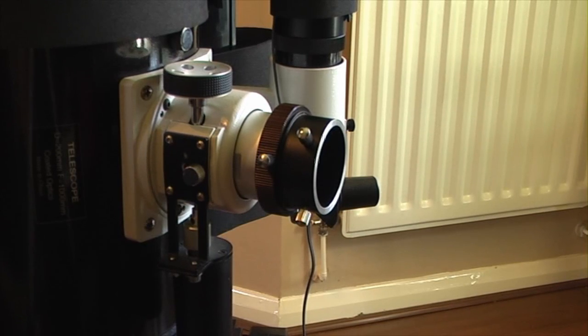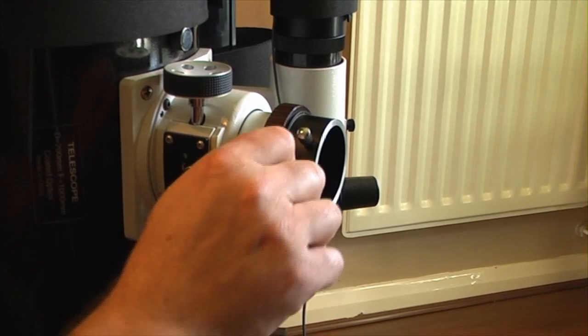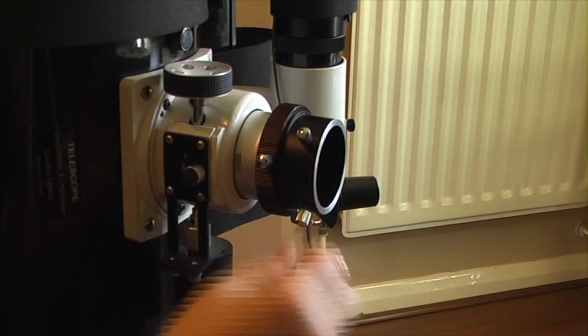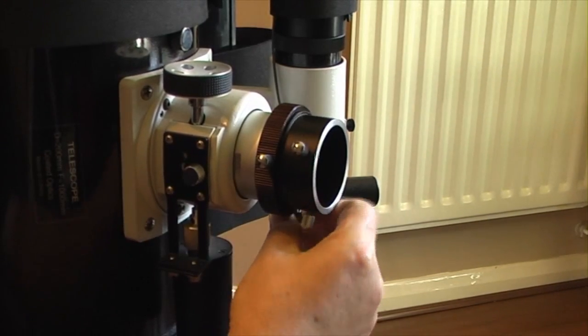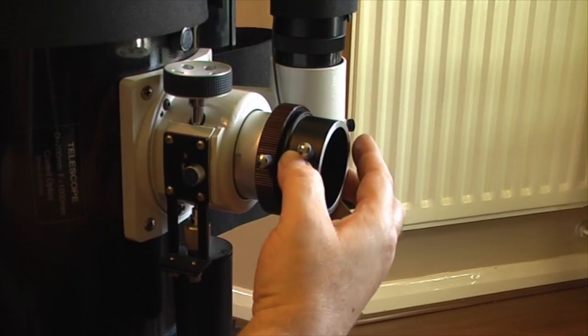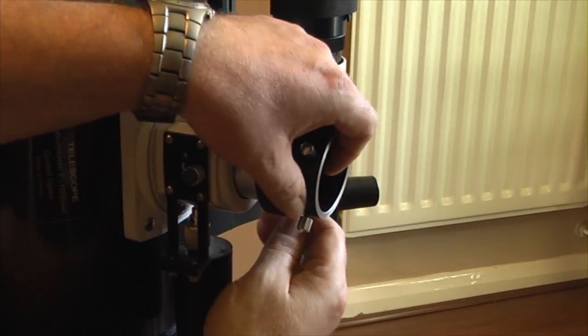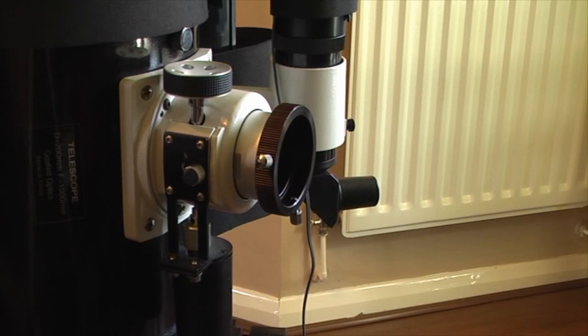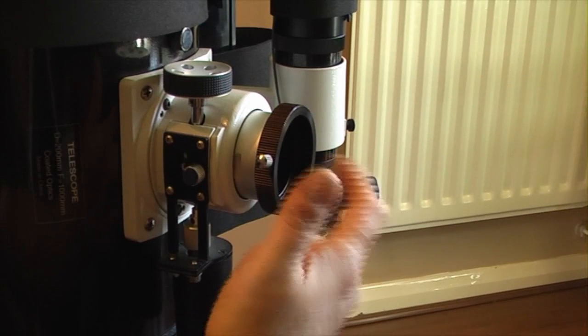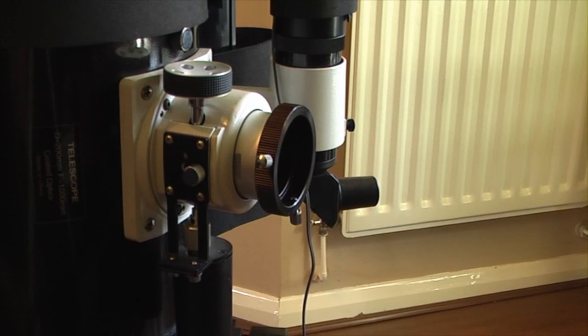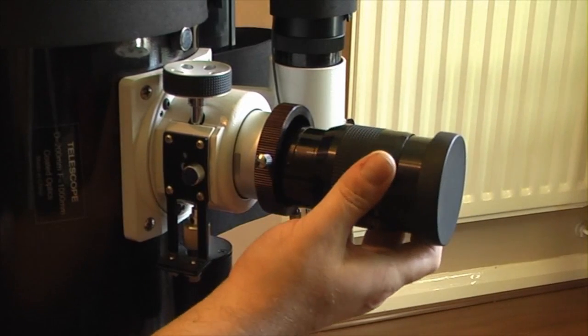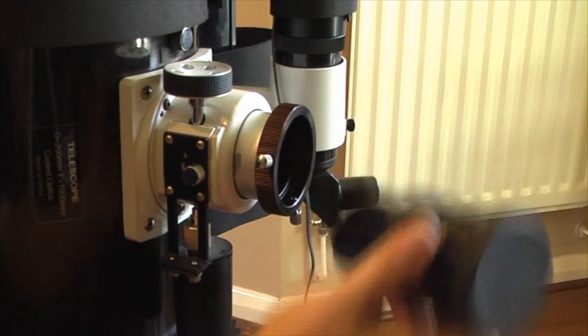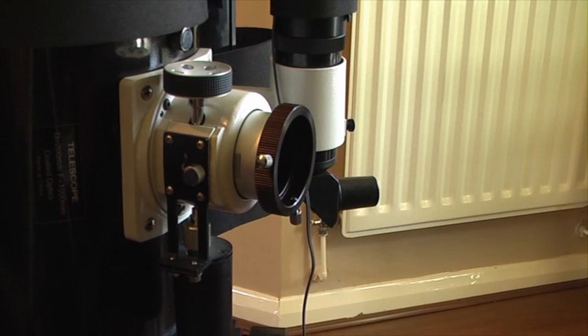Now you would think that Skywatcher would let you just unscrew these two screws like so, take the standard adapter out, and then place 2-inch fittings directly into the focuser tube, and that would answer a lot of problems. The only thing is it doesn't. Now that is where the next piece of kit comes in.